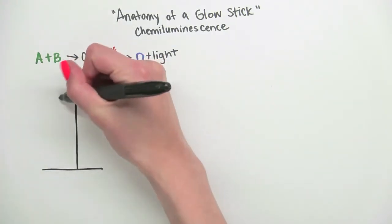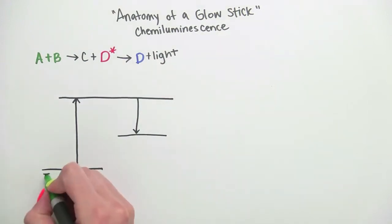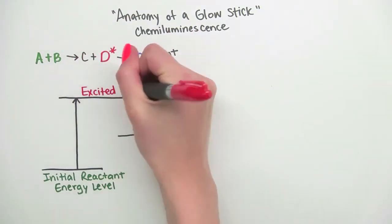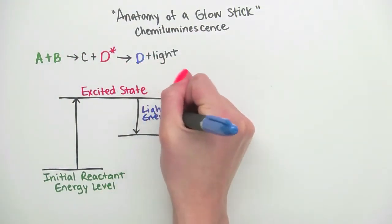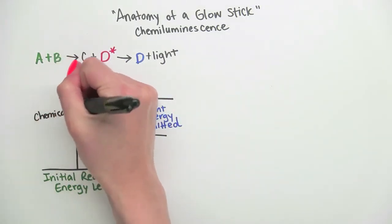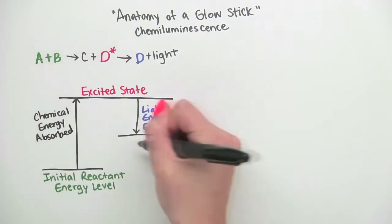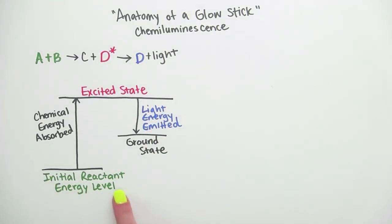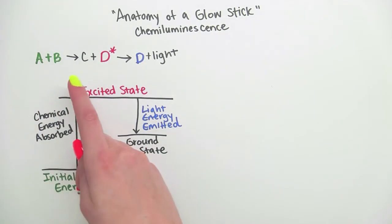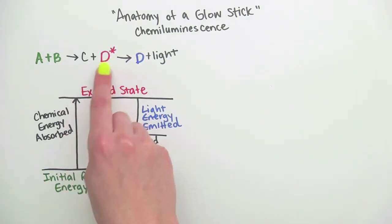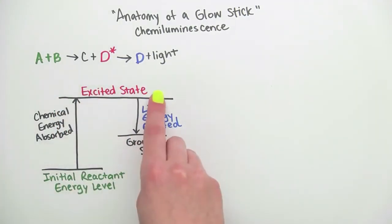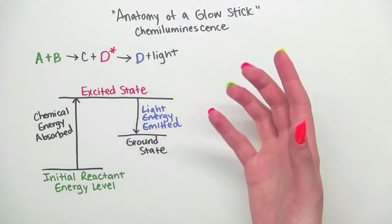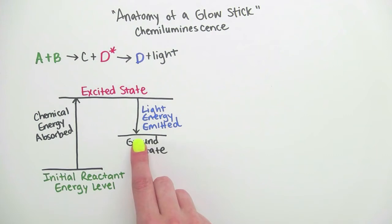Here's what's happening. This is the energy level of our reactants, A and B. When they react, they form C and D in its excited state. Now to relax back down to where it needs to be, D emits energy as light. Now there's a different amount of energy in our reactants than our products. So that's why these two energy levels are different.